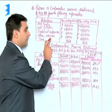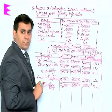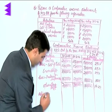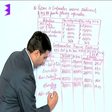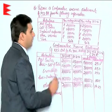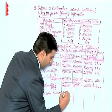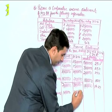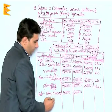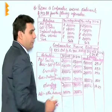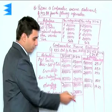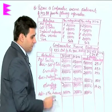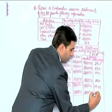Other incomes are given and there are no other expenses mentioned, so we will add other incomes directly. Other incomes are 1 lakh for the previous year and 2 lakhs for the current year. The absolute change is 2 lakhs minus 1 lakh, which is 1 lakh. The percentage change is 1 lakh divided by 1 lakh into 100, which comes to 100 percent.